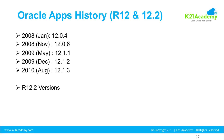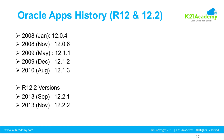A major breakthrough came with version 12.2, where Oracle introduced Oracle Fusion Middleware — specifically WebLogic Server. Before that, Oracle used its own 10g Application Server. In 12.2, Oracle introduced WebLogic Server, which Oracle had acquired from a company called BEA in 2007. WebLogic Server was first introduced into Oracle eBusiness Suite in version 12.2 in 2013. Subsequent releases were 12.2.1, 12.2.2, and the current version as of December 2017 is 12.2.6.